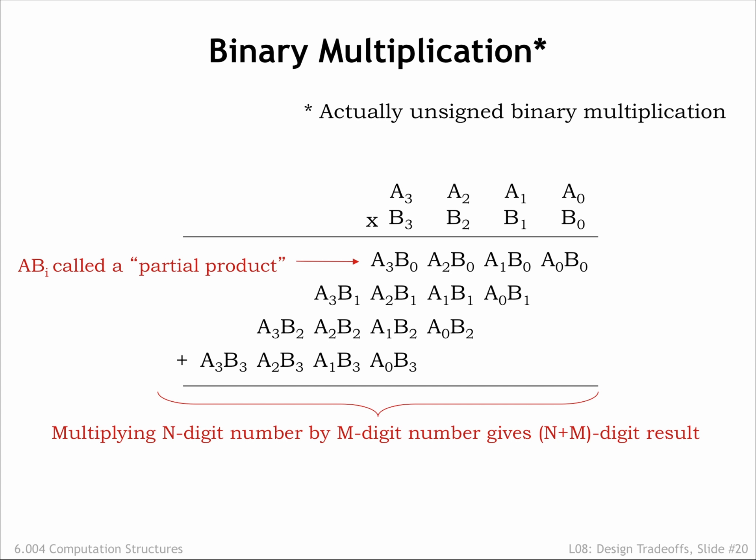The output from this step is called a partial product, and then we repeat the step for the remaining bits of the multiplier. Each partial product is shifted one digit to the left, reflecting the increasing weight of the multiplier digits.